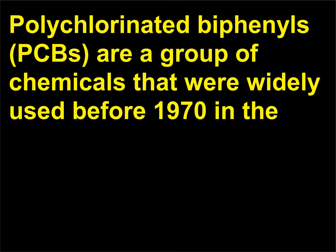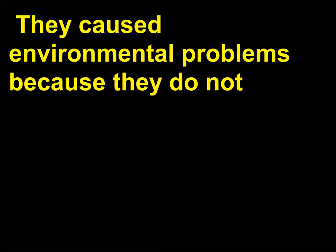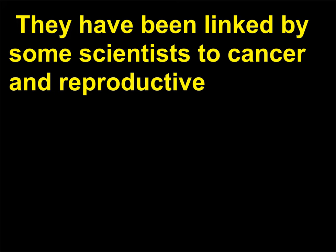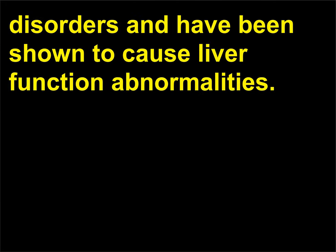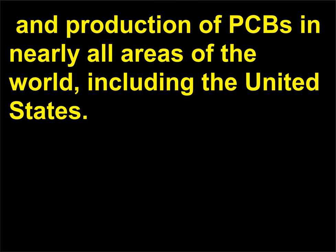What are PCBs? Polychlorinated biphenyls (PCBs) are a group of chemicals that were widely used before 1970 in the electrical industry as coolants for transformers, capacitors, and other electrical devices. They caused environmental problems because they do not break down and can spread through the water, soil, and air. They have been linked by some scientists to cancer and reproductive disorders and have been shown to cause liver function abnormalities. Government action has resulted in the control of the use, disposal, and production of PCBs in nearly all areas of the world, including the United States.